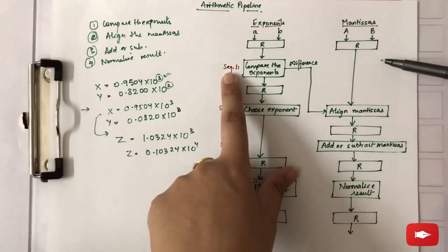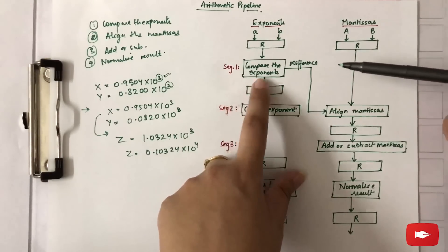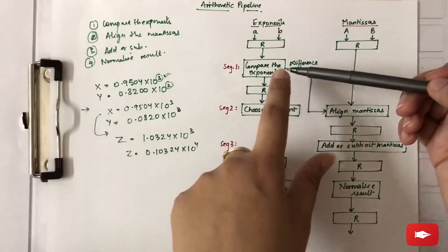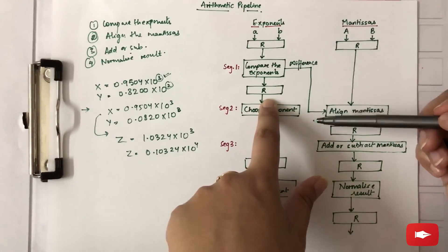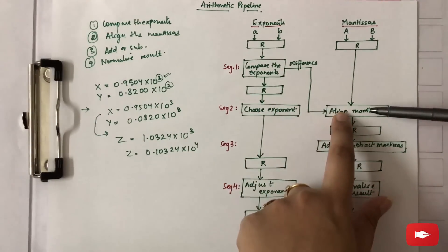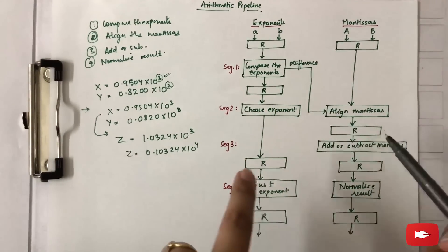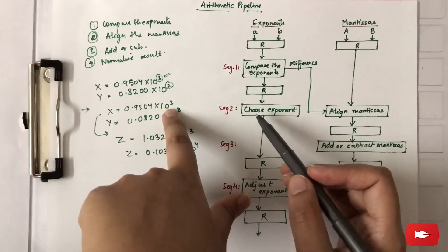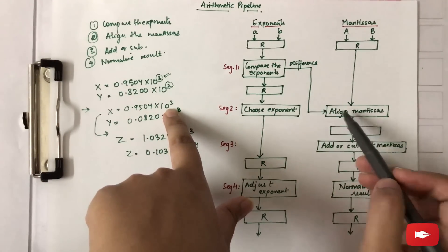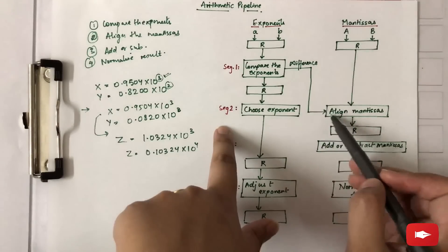After the comparison is done, it is stored in the register. In segment 2, we align the mantissas according to that difference, meanwhile we choose the exponent as we chose 3 here. This is done simultaneously.